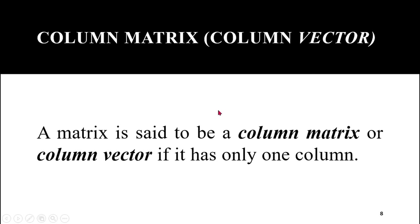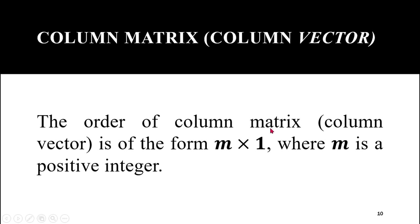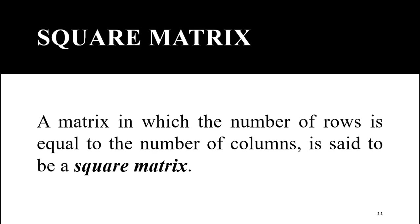Similarly, a column matrix or column vector is a matrix which contains only one column. These are examples of column matrices as they contain only a single column but different numbers of rows. The order of the first matrix is 5×1, the order of the second matrix is 2×1, and the order of the third matrix is 3×1, because they contain respectively five, two, and three rows. We can conclude that the order of a column matrix is of the form m×1, where m is a positive integer representing the number of rows.